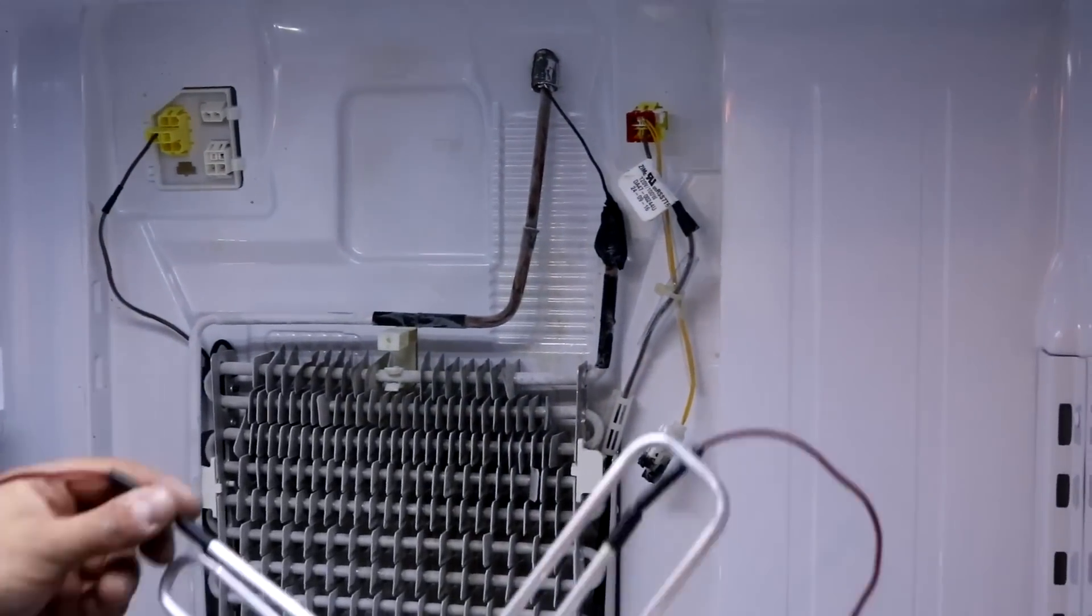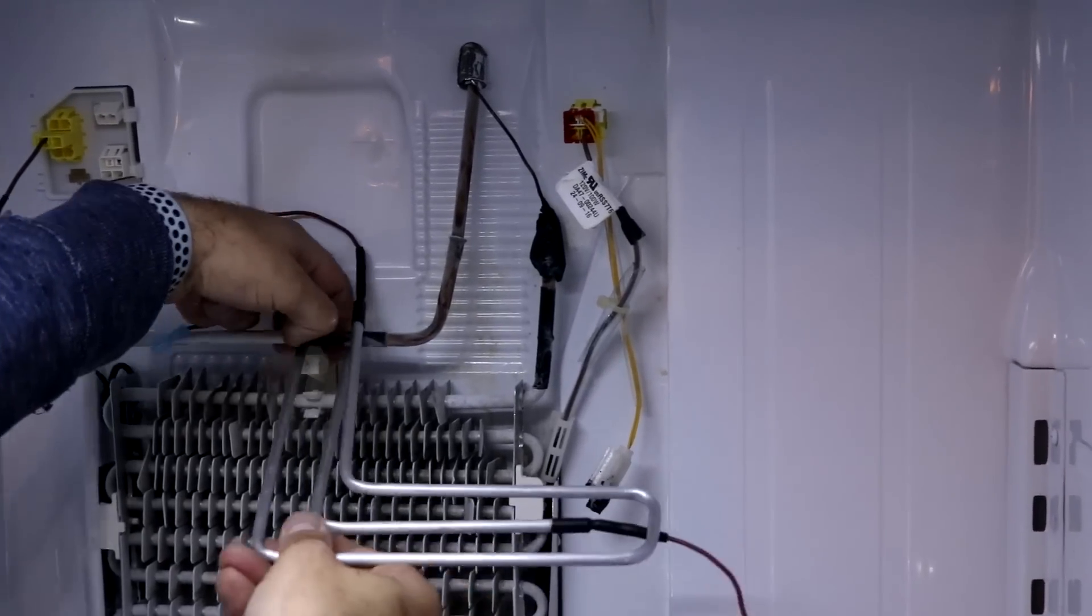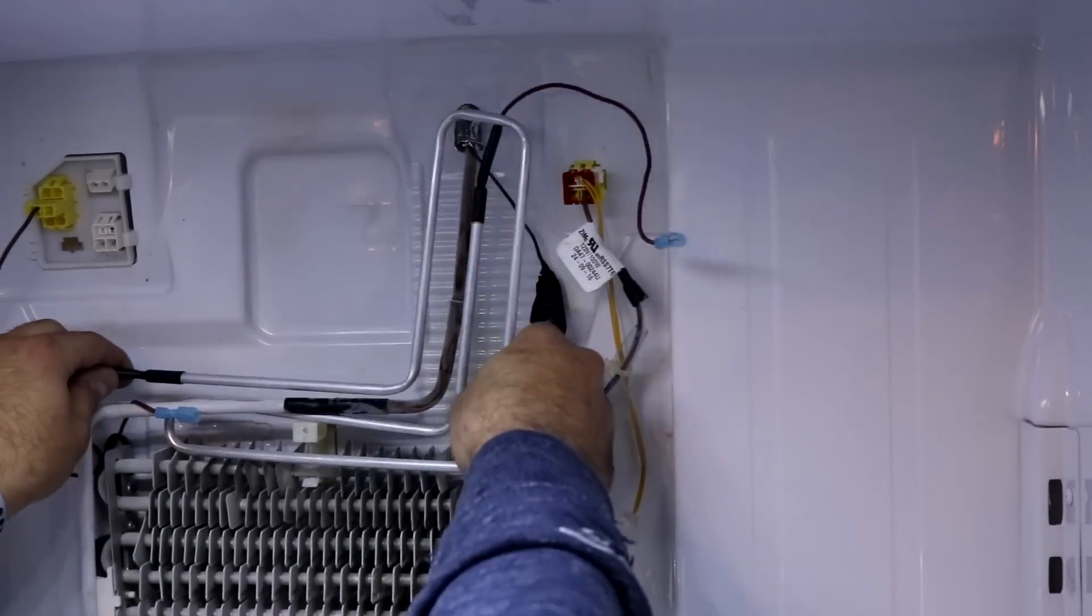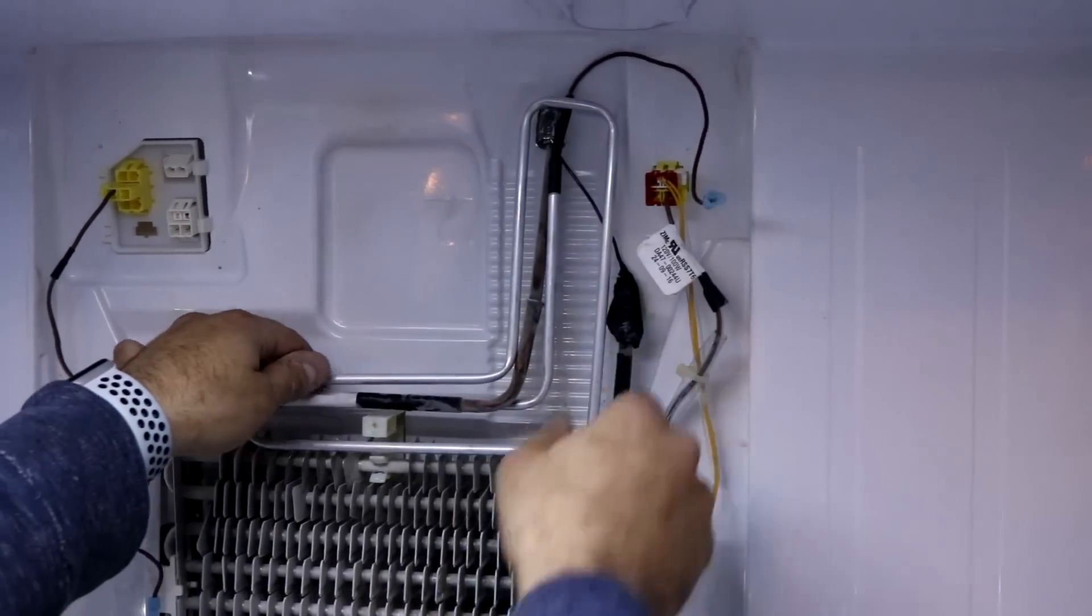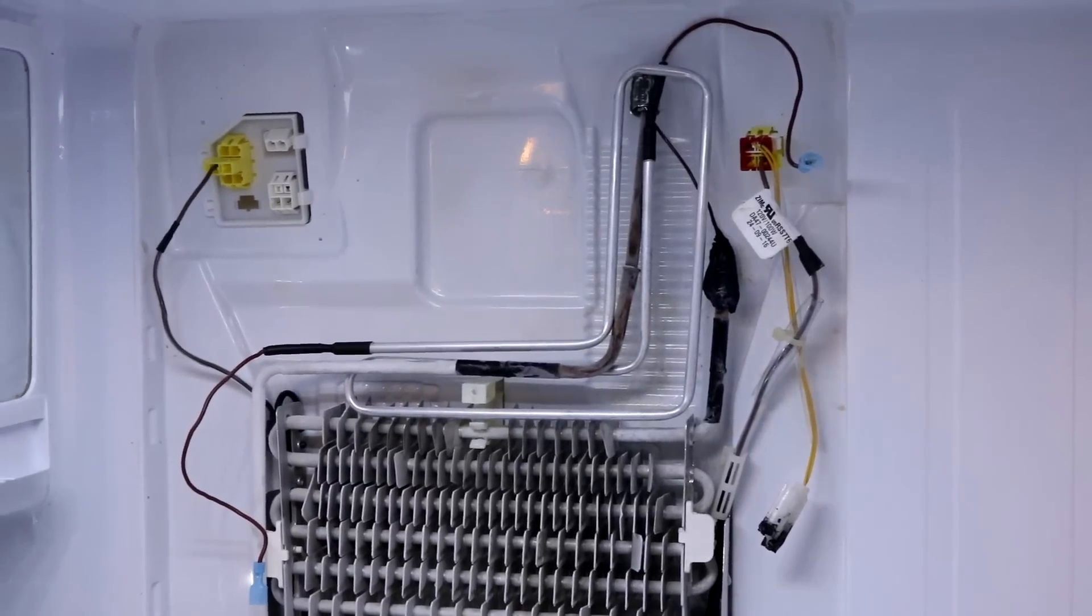Here we are with the heater. We're going to loop that underneath the coil, slide it over, and you should have a position like this right above the evaporator coil.